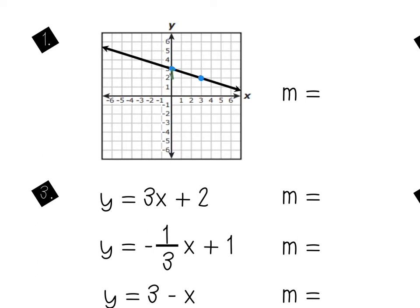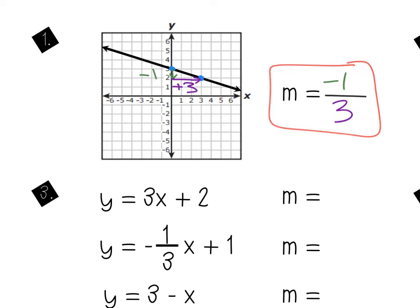All I have to do is count the rise and the run between them and I've calculated my slope. To get from the first point to the second point — I went down one. How much did I run to get to the same point? One, two, three — I went over three. So my slope, which is the rise over the run, is negative one over three. And literally that's it. We've done this before — looks familiar.